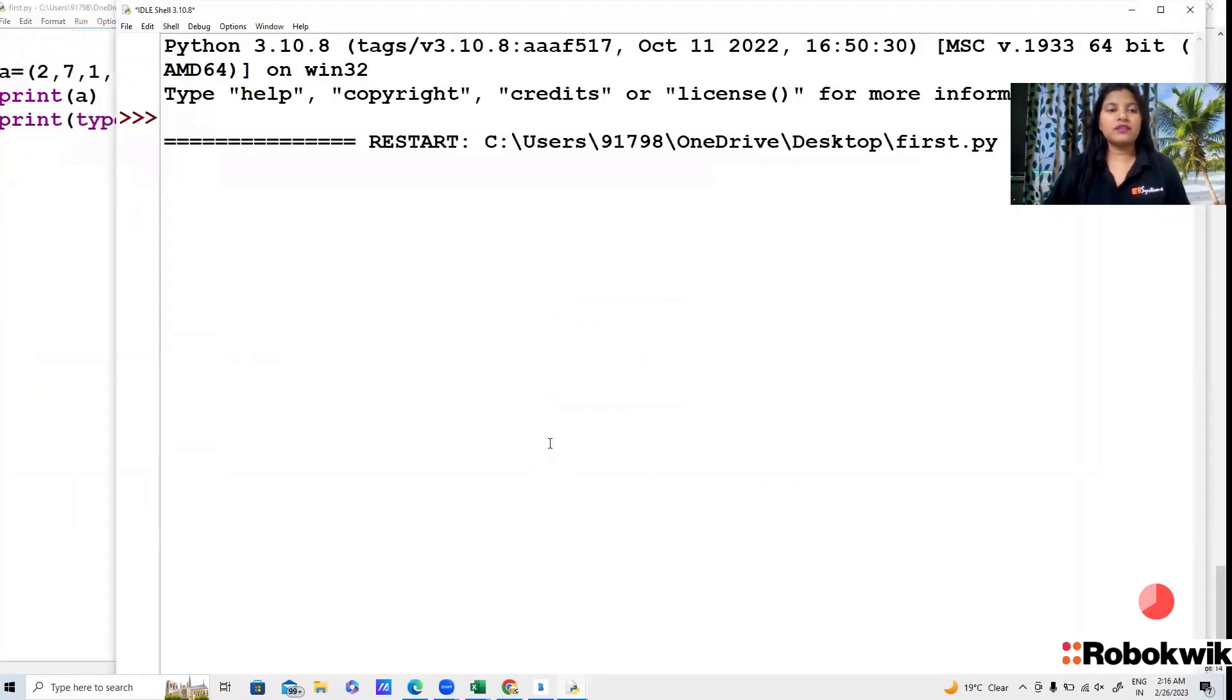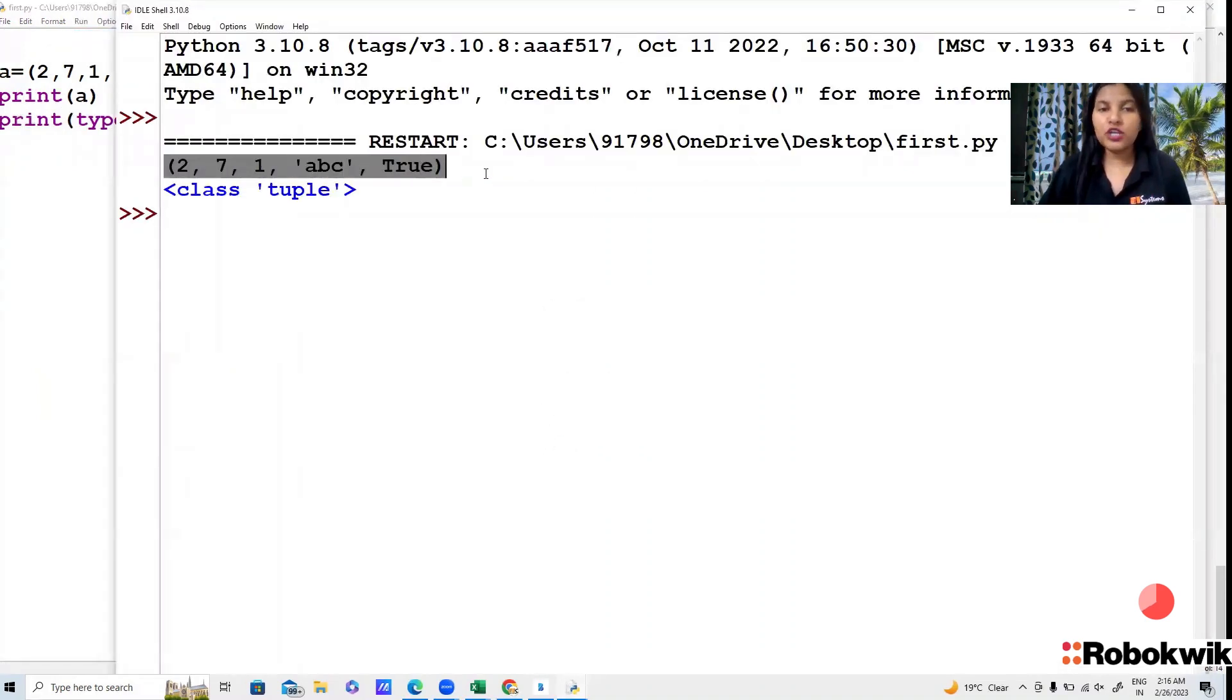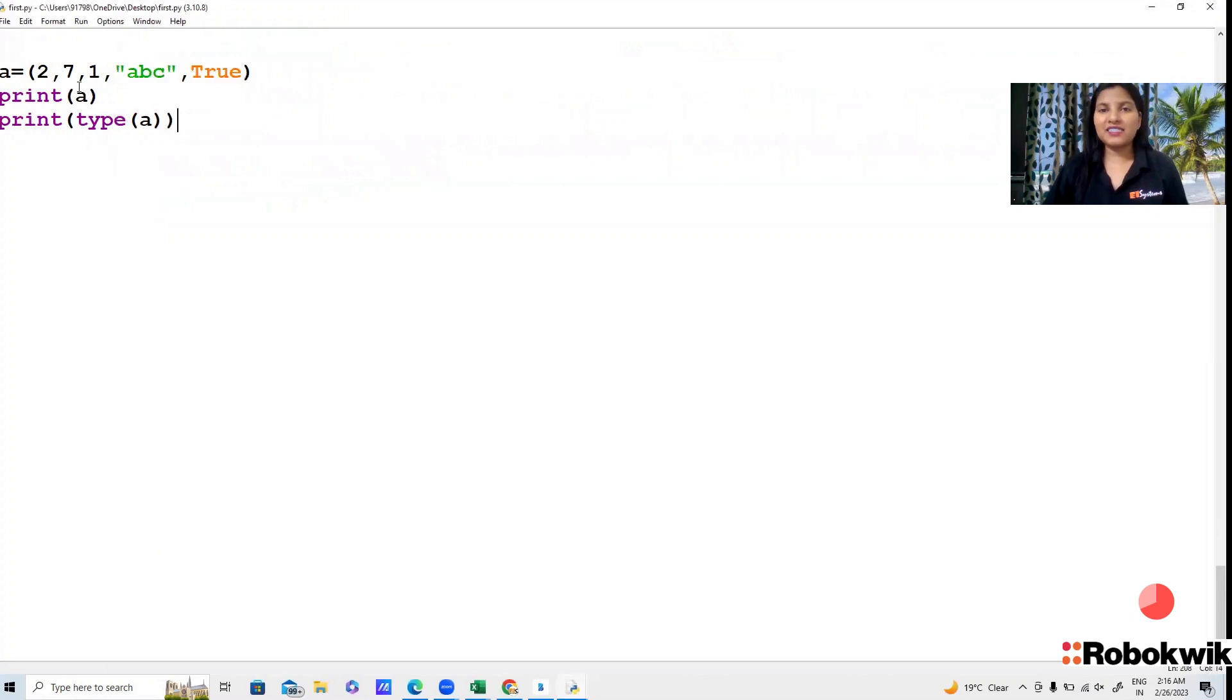Run this code. And the answer is, I will print the value of A and type of A. Now if I have only access A and type of A, if I have only access A and type of A, so we need indexing. And this will show something. Because it is ordered and indexed. First, the value is 2, then 7, then 1, then A, B, C, and then true. This is our value.